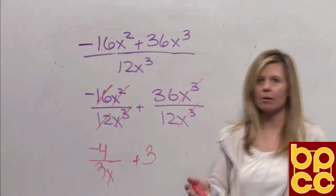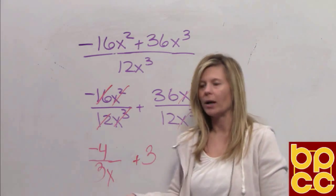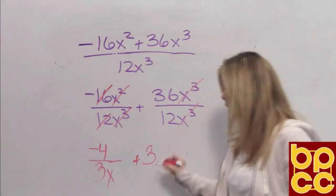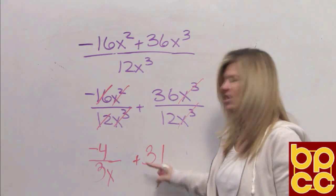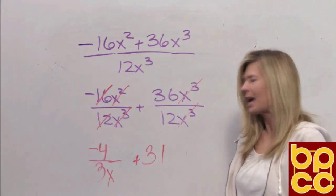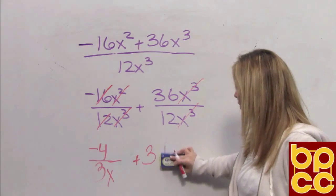Remember, 3 minus 3 is 0. x to the 0 is 1. Why am I not writing the 1? Because that 1 would be right next to that 3, which means it would be multiplication. And 1 times 3 is 3.